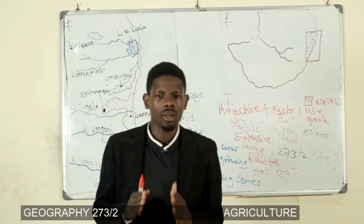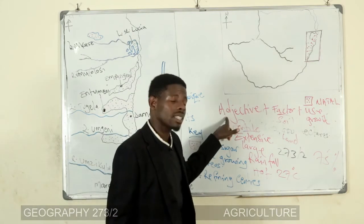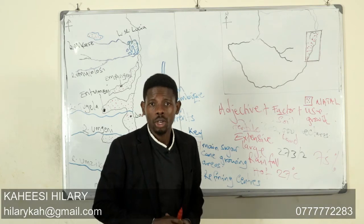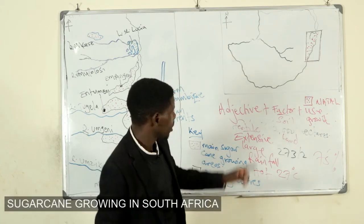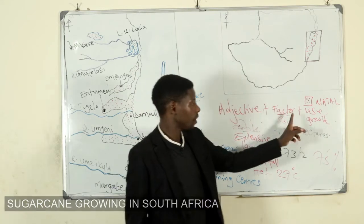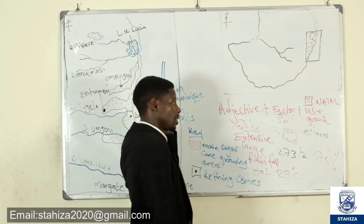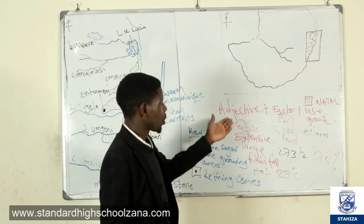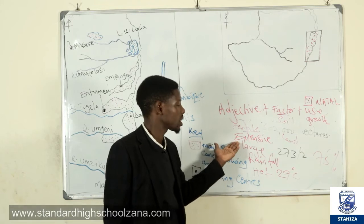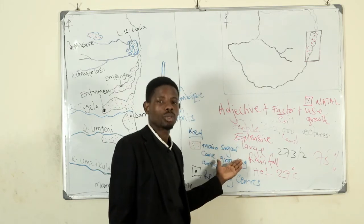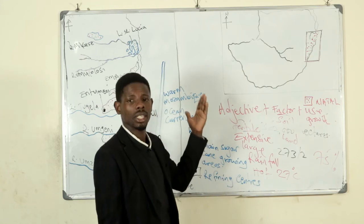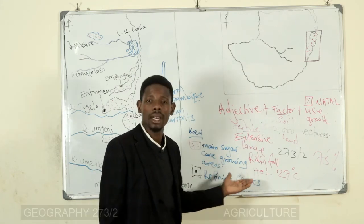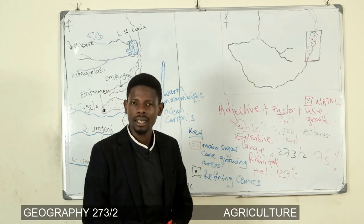Those are the physical factors. Always use the correct adjective — don't say 'good soil' or 'enough land,' but use the correct adjective, the factor, and then the use of that factor. In summary, we have talked about fertile soils, extensive land, reliable rainfall, hot temperatures, low altitude, and relatively flat landscape. Those are the physical factors.